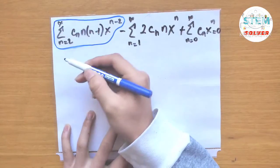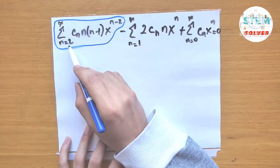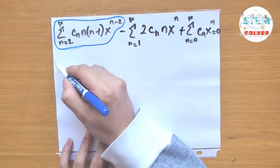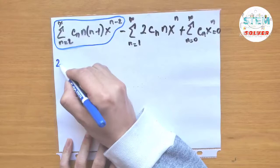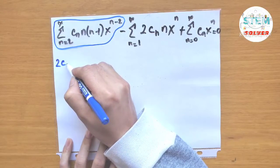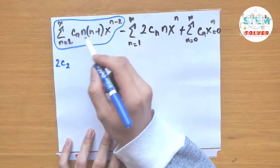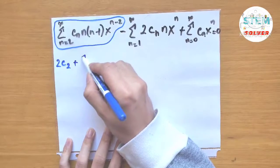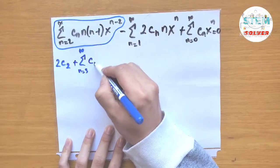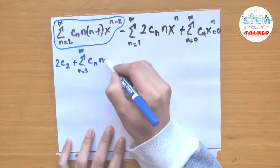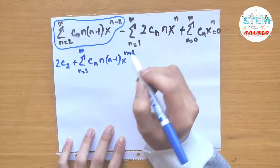For the y double prime series, we pull out the n equals 2 term: 2c_2 times x to the 0, which is 1. Then the remaining series runs from 3 to infinity of c_n times n times (n minus 1) times x to the n minus 2.